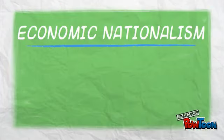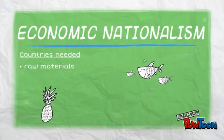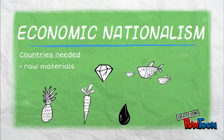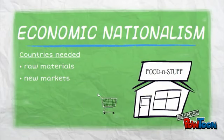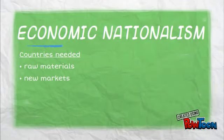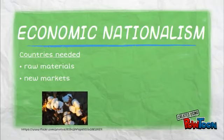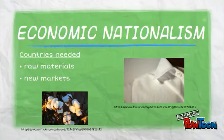The next reason is economic nationalism. As European nations industrialized, they needed raw materials to make finished goods, and they also wanted to sell these goods to new markets, so dominating places like India and China really helped them get there. For example, Britain got tea from China and cotton from India. They also sold opium to China and took that cotton and made it into textiles to sell back to India.